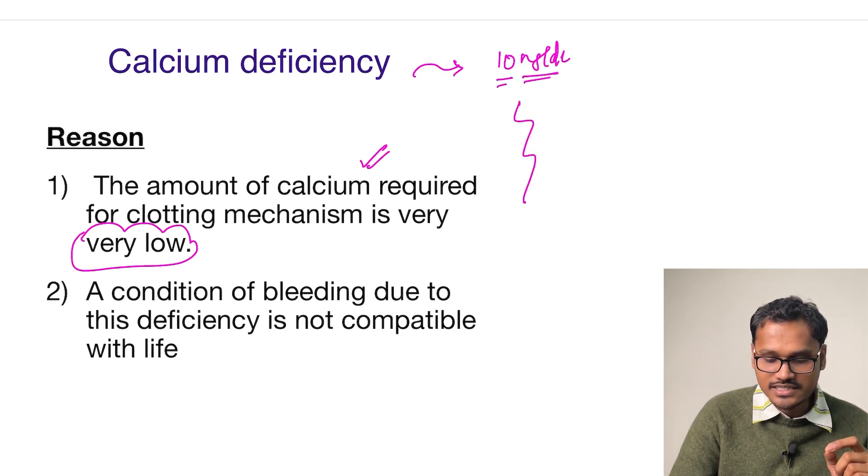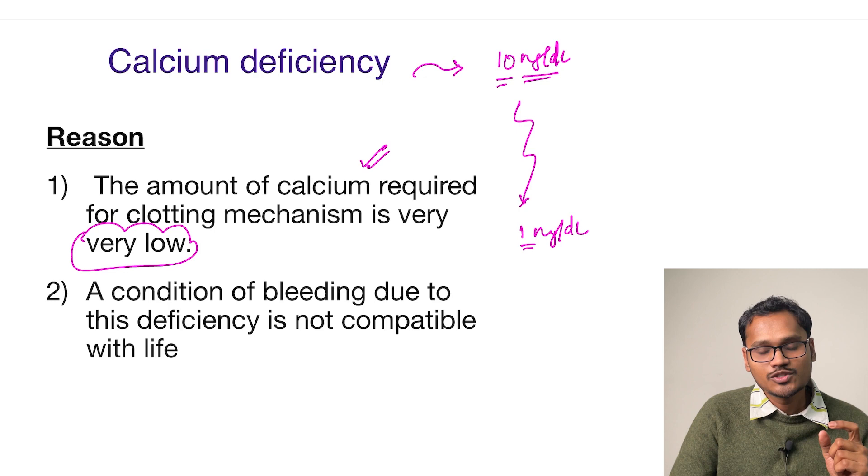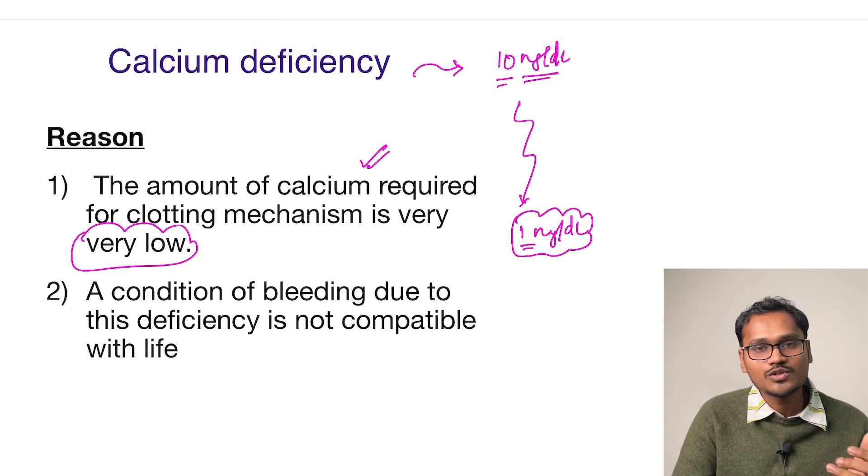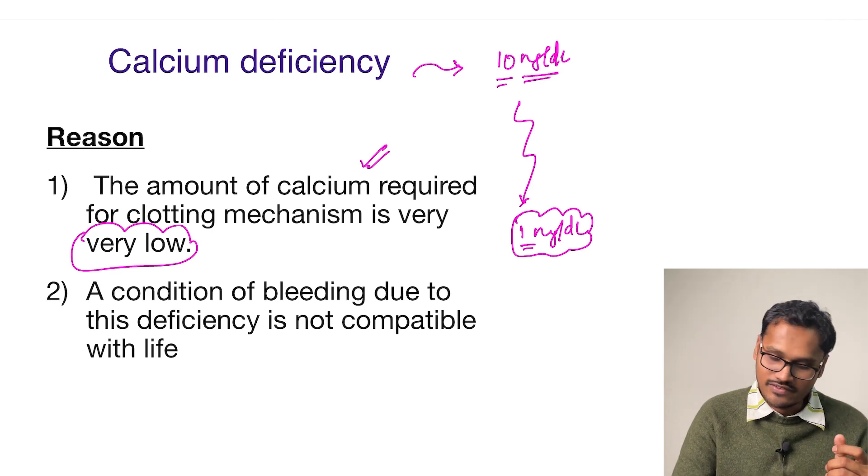Let's consider the amount required for clotting is just 1 milligram per deciliter—very minimal. This amount of calcium will always be available in the body. Now, consider a condition where